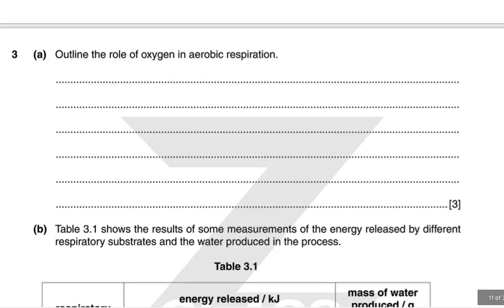Oxygen in aerobic respiration — specifically in oxidative phosphorylation — acts as the final electron acceptor. It is reduced to water as it accepts hydrogen ions, allowing the electron transport chain to continue and promoting ATP production. In the absence of oxygen, only glycolysis and therefore anaerobic respiration can continue.